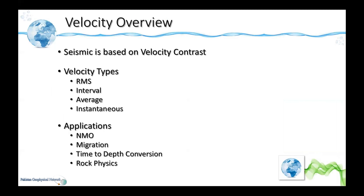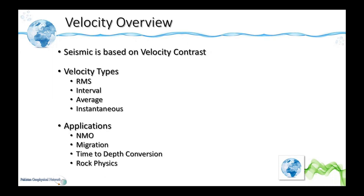We know that the contrast for seismic is velocity — in fact velocity is the most important parameter in seismic. It is a very complicated parameter because, unlike other geophysical parameters like resistivity or density, seismic velocities come in a number of types. In processing we have RMS velocities, which can be converted into interval velocities; we also have average velocities and instantaneous velocities. We have to take care which type of velocity we are using for a specific purpose.